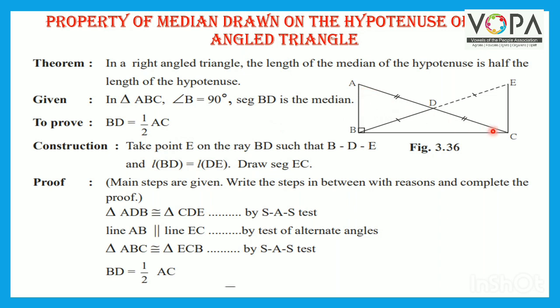Construction: take point E on the ray BD such that B-D-E, and length BD is equal to length DE. Draw segment EC.